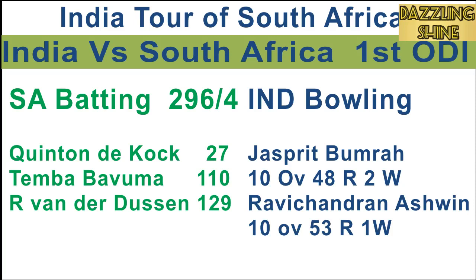At the end of 20 overs, South Africa are 80 for three. India are in control at this stage. Fifth ball of the twenty-first over, Chahal to Dusan — he sweeps it through mid-wicket and it rests to the boundary rope. Third ball of the twenty-third over, Chahal to Dusan again — Dusan sweeps through cow corner and that's gone to the boundary rope. First ball of the twenty-fourth over, Shadul to Dusan — a full toss and Dusan clubs it over long on for the first maximum of the match.